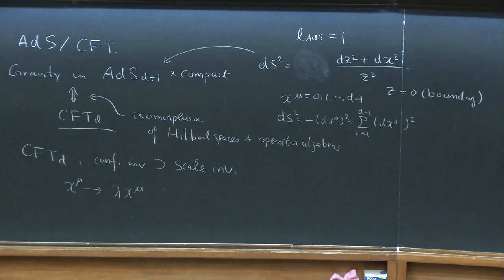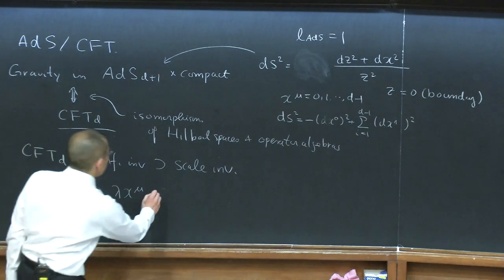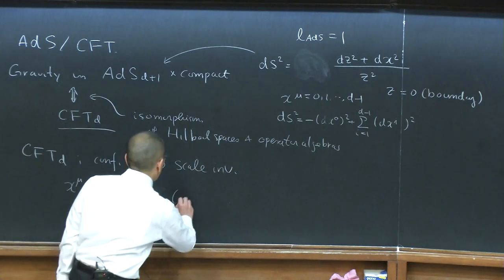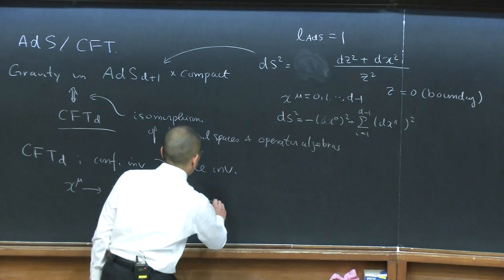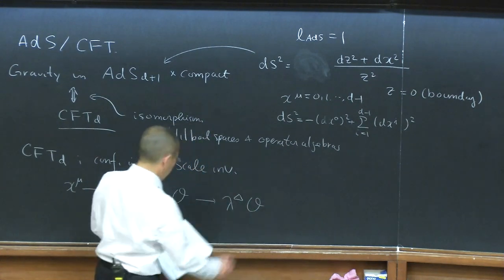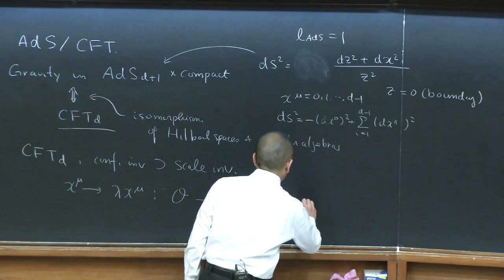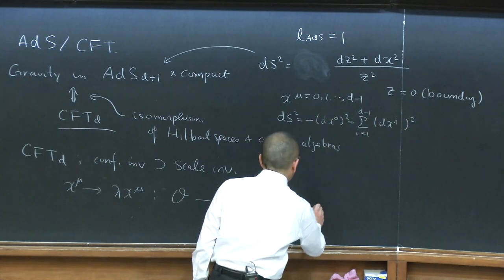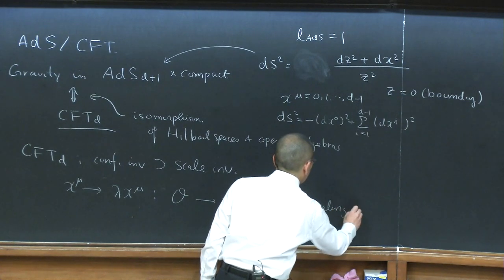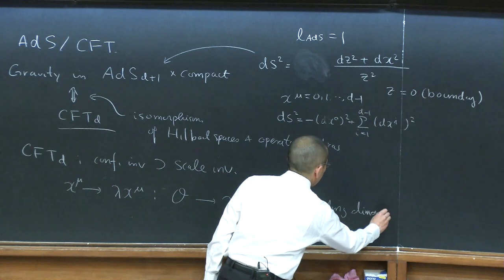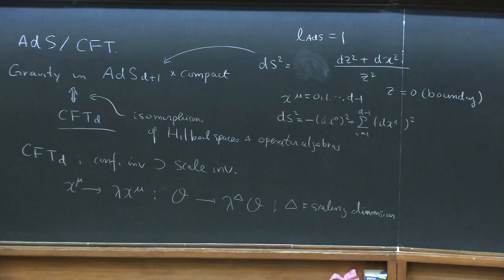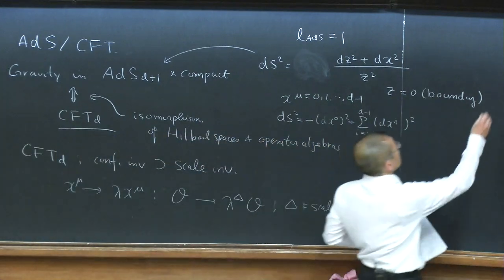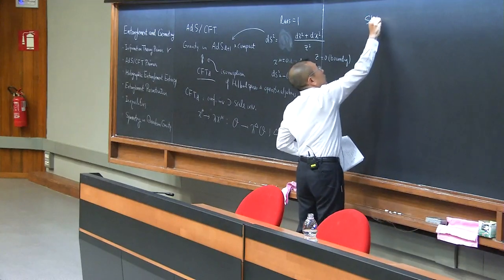This is a conformal scaling transformation. In this conformal field theory, there are lots of operators, and these local operators are each characterized by their scaling dimension delta. One of the very important concepts in conformal field theory, which plays a very key role in this correspondence, is the so-called state-operator correspondence.